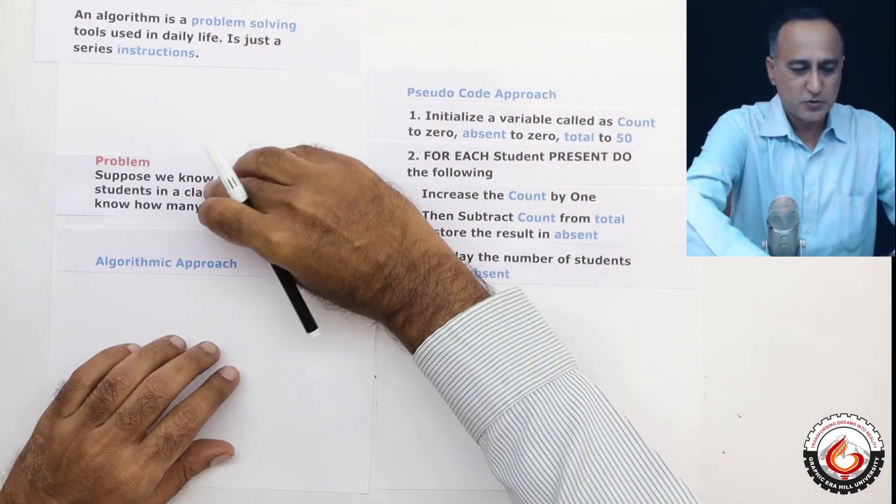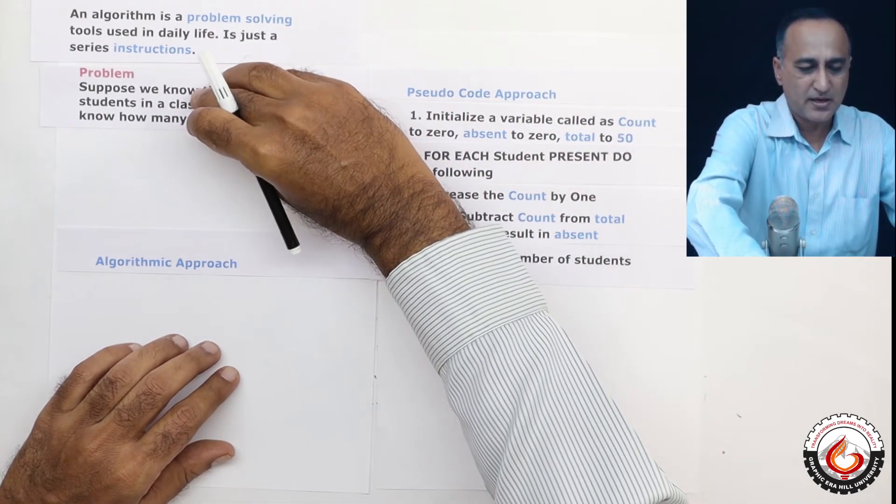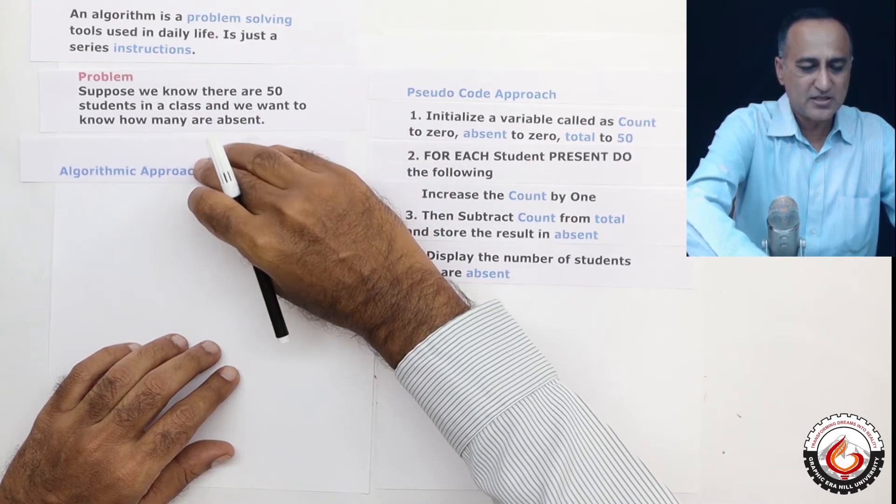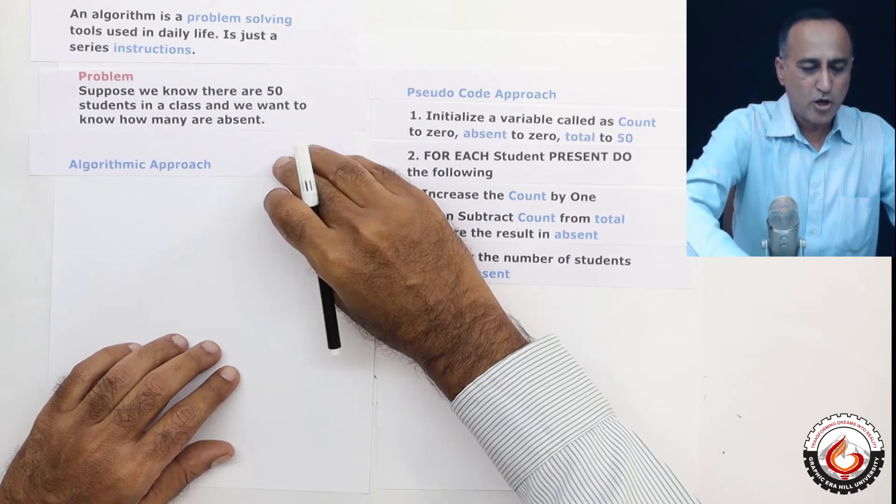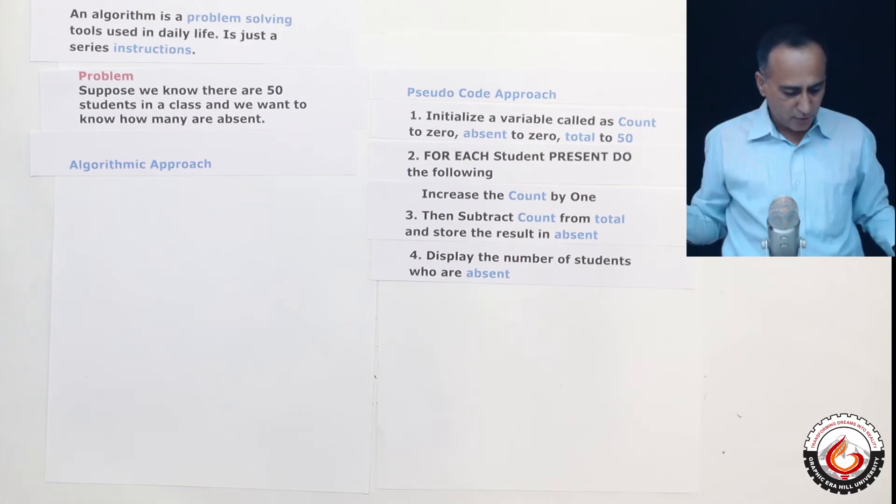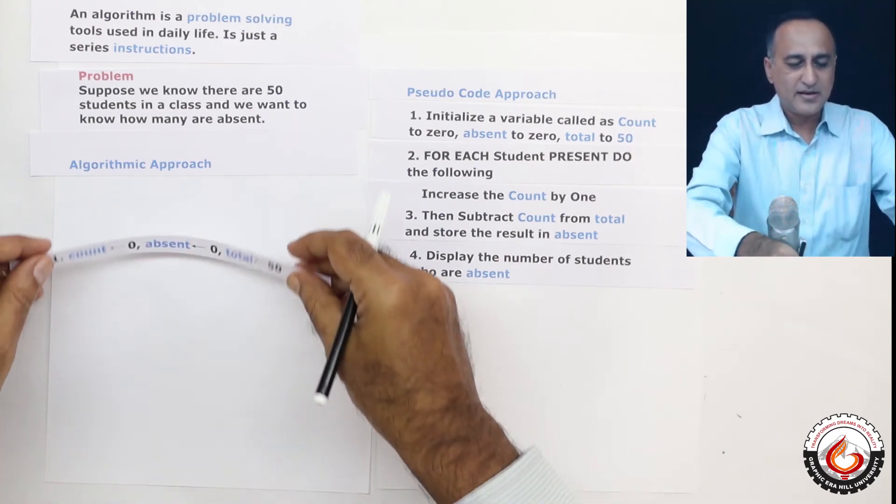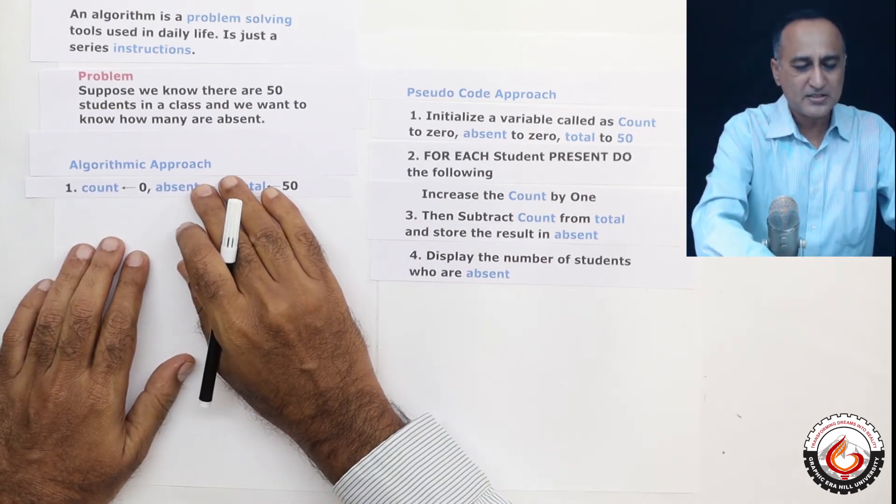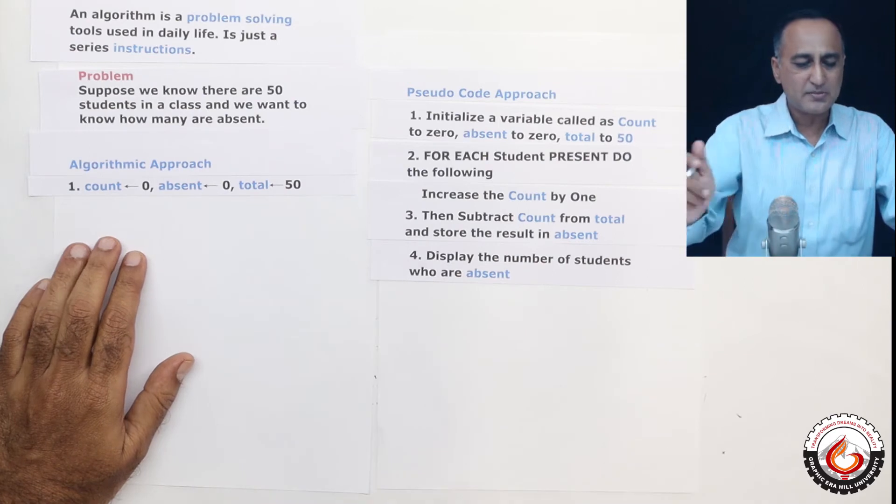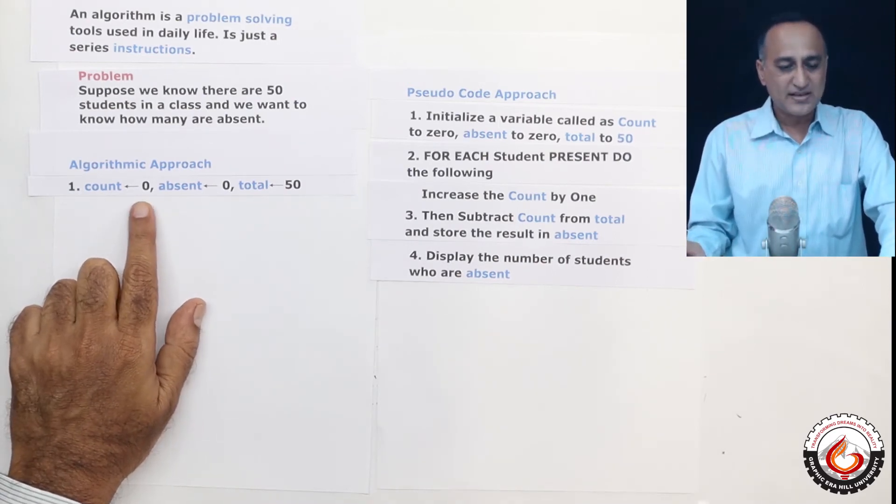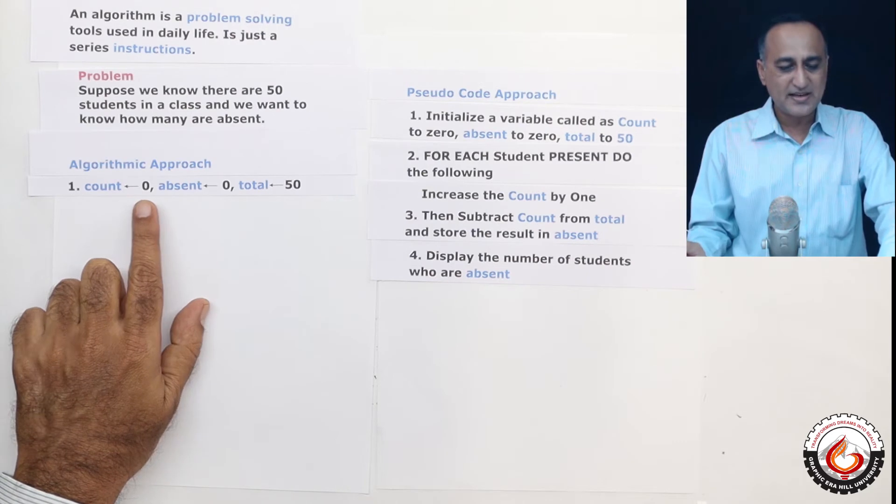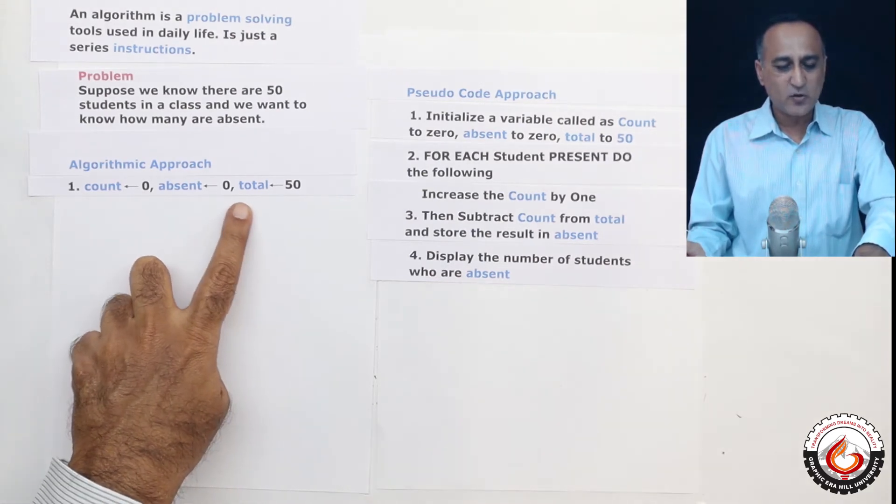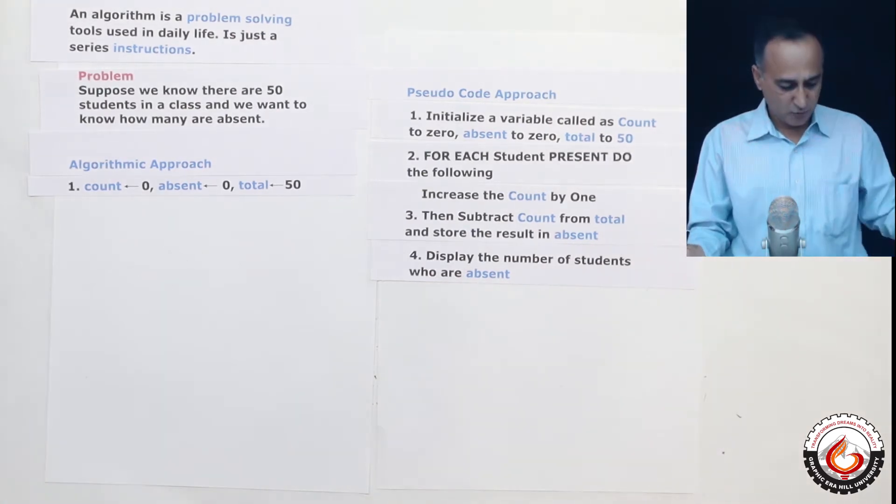So the problem should still be clear to you. We have 50 students in the class, and we want to know how many are absent. So in the algorithmic approach, just see how little I have written in English, I have just spoken as though I am doing some mathematical steps. So I am taking three variables: count is initialized to zero, this arrow symbol is assigned, absent is assigned the value zero and total is assigned the value 50.